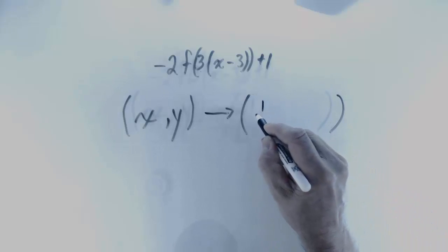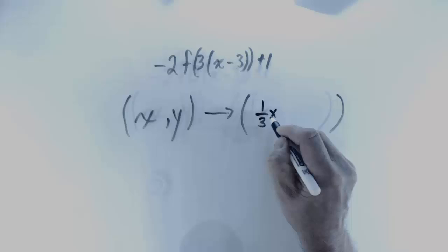In other words, my x coordinate is going to be 1 third of whatever it was before.